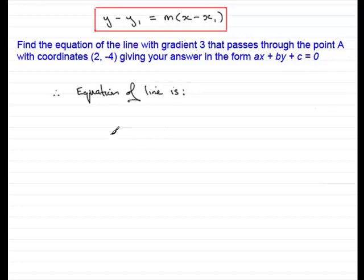Okay, what is it? Well, it's going to be y minus y₁ being -4 equals the gradient m which is 3 multiplied by x minus x₁ and x₁ is 2.